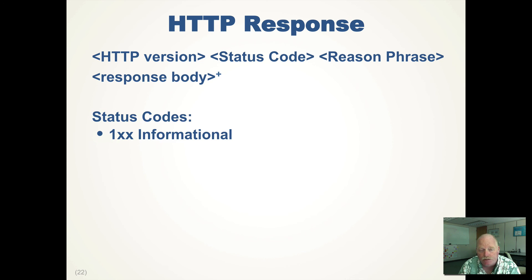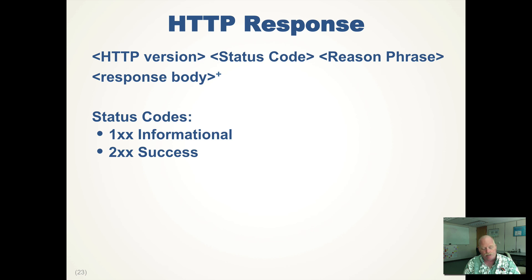Status codes are broken down into five groups. The 100s are informational status codes — information about the item, not used very often. The 200s mean success — whatever the request was, the server was able to process it and your request has been successfully responded to. If it's a GET, the response body holds the representation of the resource. If it's a PUT, you successfully added the item. If it's a POST, you've updated the resource. If it's a DELETE, the resource has been deleted.